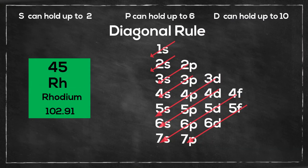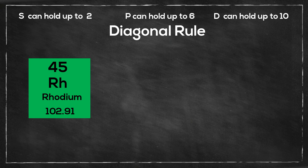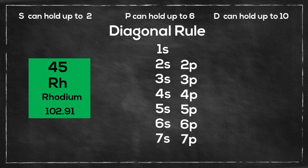I'd like to use the diagonal rules, so I will draw the diagonal chart. I will start with the 1s, go 1 through 7, then the p's, then the d's, then the f's. The s orbitals can hold up to 2.